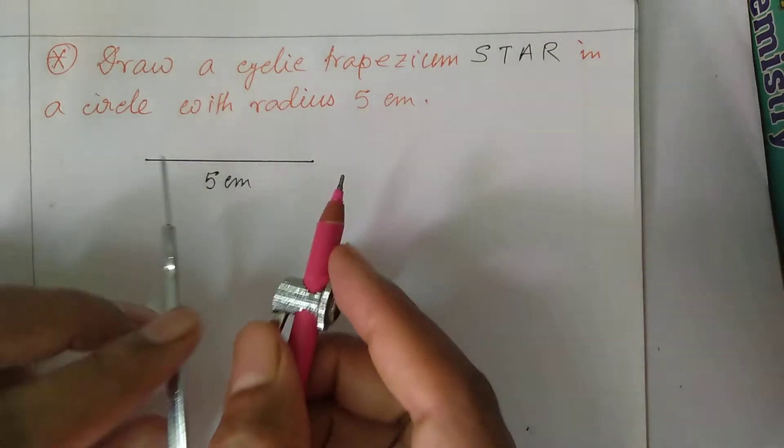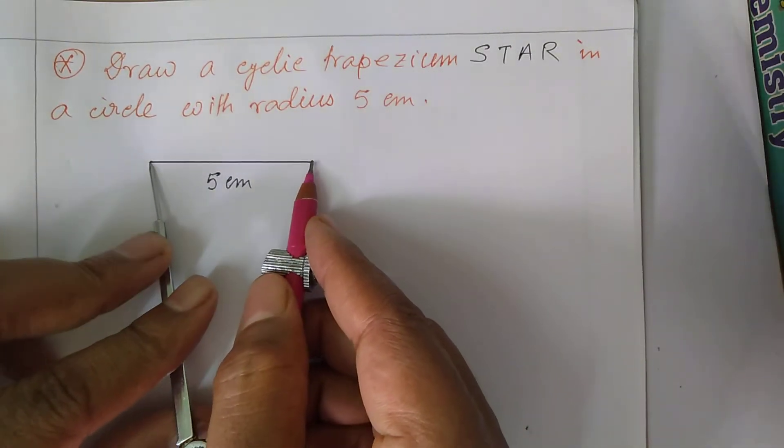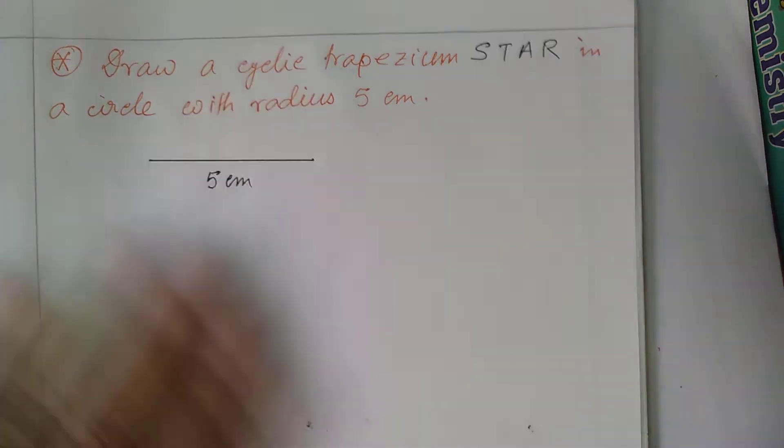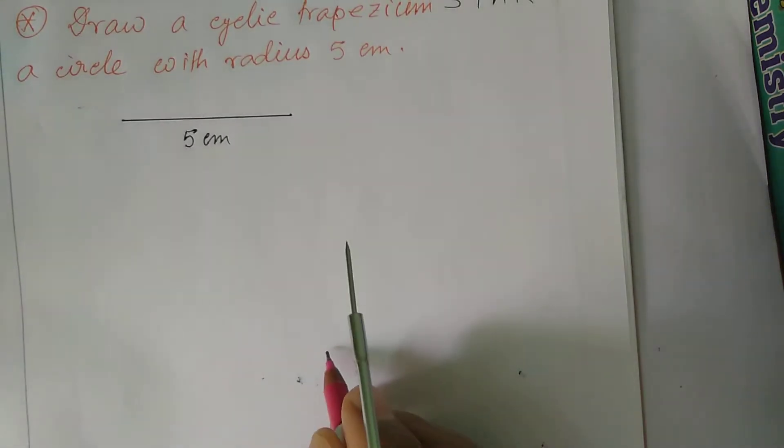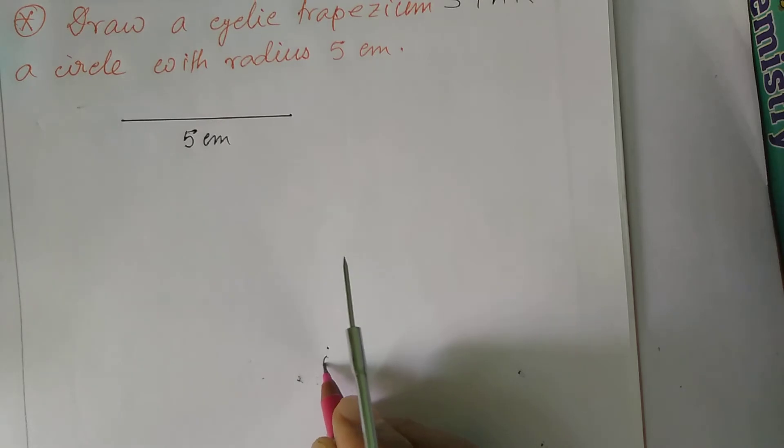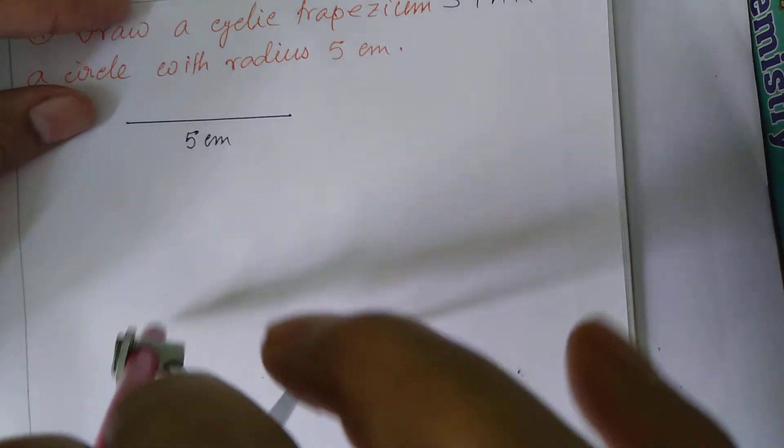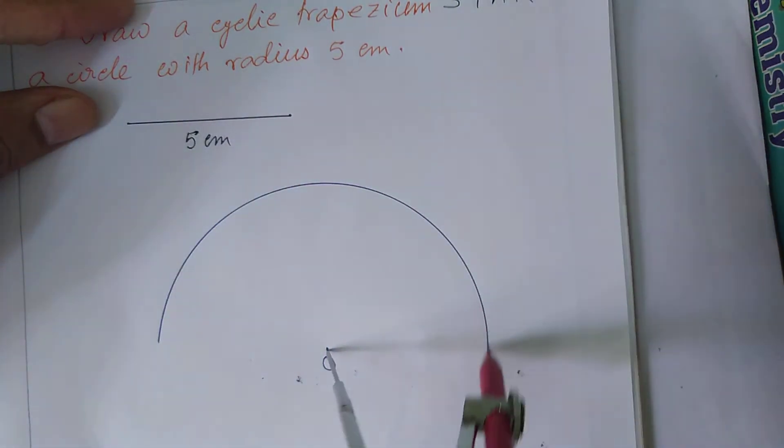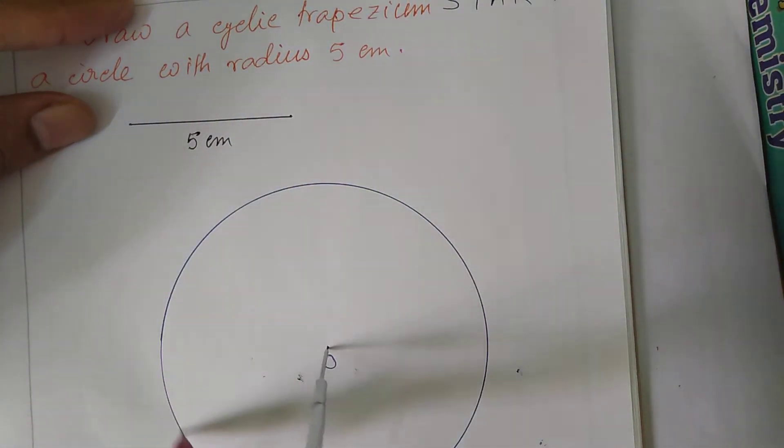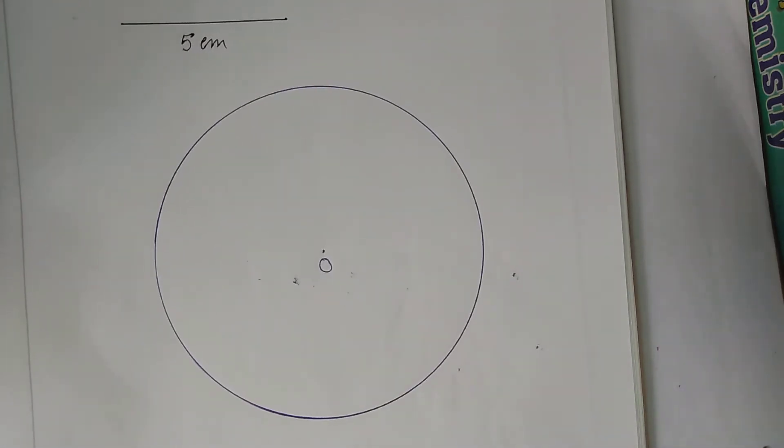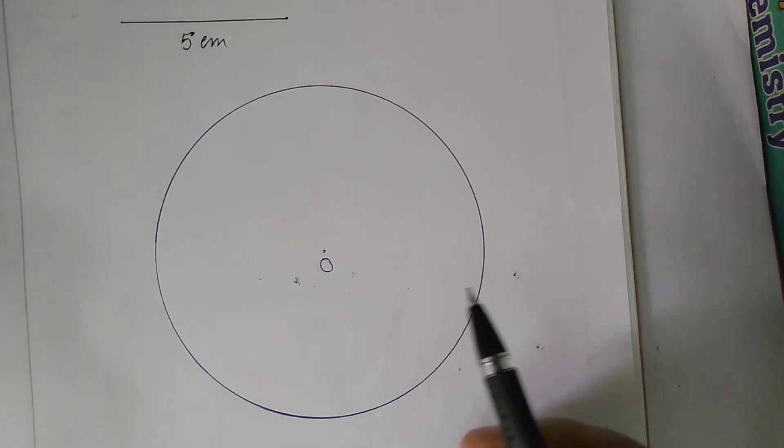Now take this segment, draw a point O, and draw this circle. This is our circle with radius 5 cm.